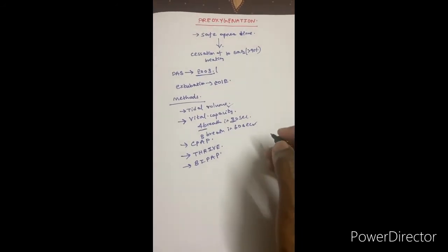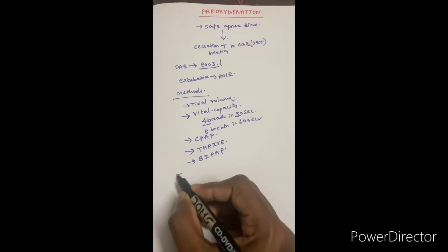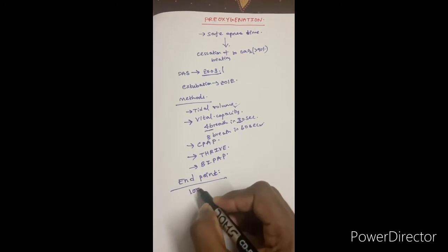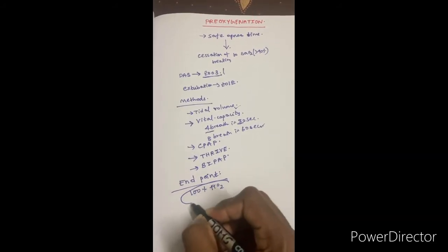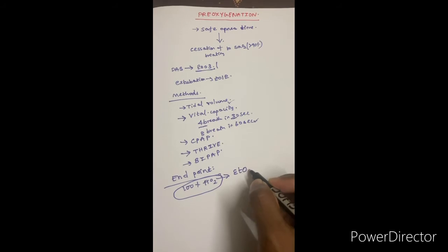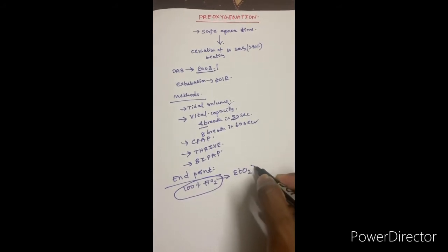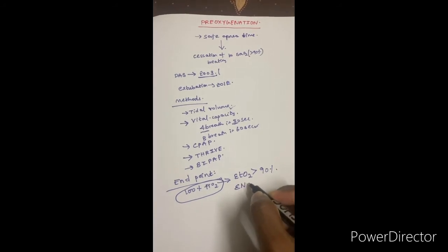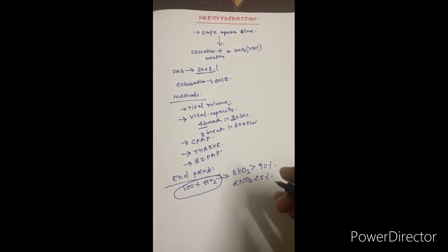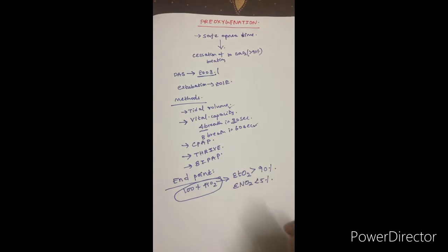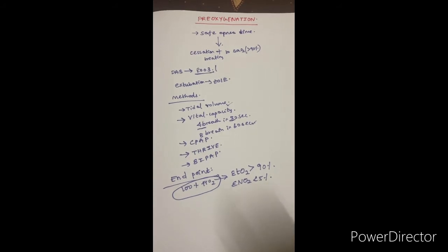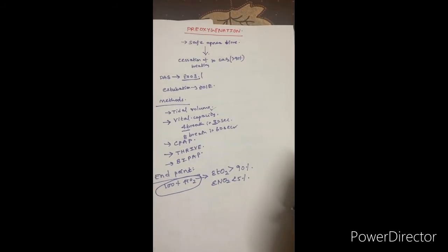The endpoint of pre-oxygenation: when oxygenating the patient with 100% FiO2, the endpoint is an end-tidal oxygen concentration of more than 90%, or an end-tidal nitrogen concentration of less than 5%. This means the patient is adequately pre-oxygenated. The time required for pre-oxygenation varies from individual to individual, which will be discussed in detail using the alveolar gas equation.